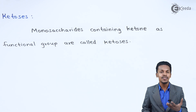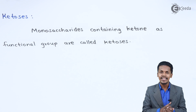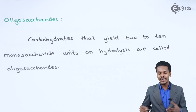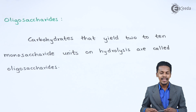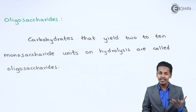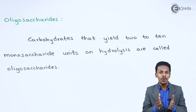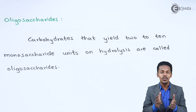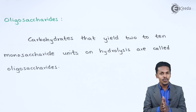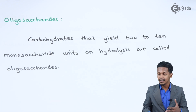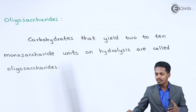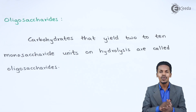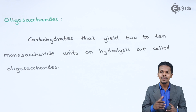Now let us discuss the classification of Complex Carbohydrates — Oligosaccharides and Polysaccharides. Oligosaccharides are Carbohydrates that yield 2 to 10 Monosaccharide units on hydrolysis. They are classified into Disaccharides, Trisaccharides, and Tetrasaccharides. Disaccharides produce 2 Carbohydrates on hydrolysis. For example, Sucrose is a Disaccharide under Oligosaccharides — when hydrolyzed it produces 2 Monosaccharides. Cellobiose is another example of a Carbohydrate that gives 2 Monosaccharides.